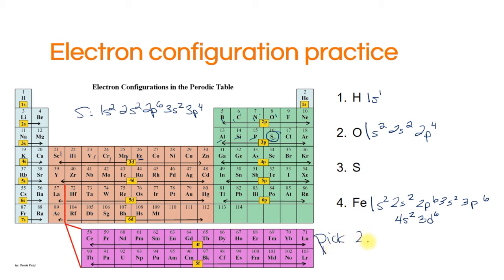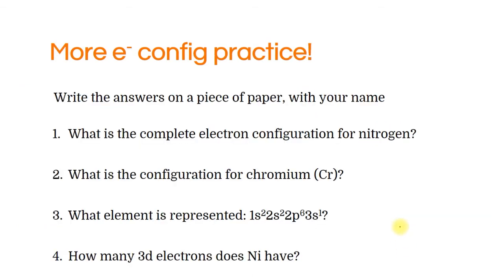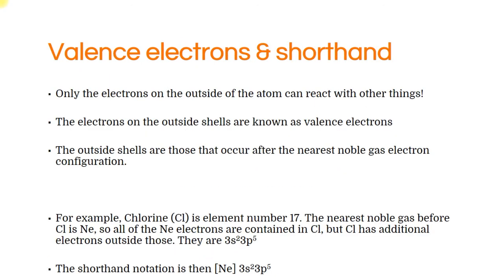I want you to pick two elements and write the electron configuration for each — pause the video, take a second, and do that. On a separate piece of paper, do the same thing for nitrogen and chromium, figure out what element is represented by a given configuration, and count the number of 3d electrons in nickel. You'll compare answers in class. That's your homework assignment.